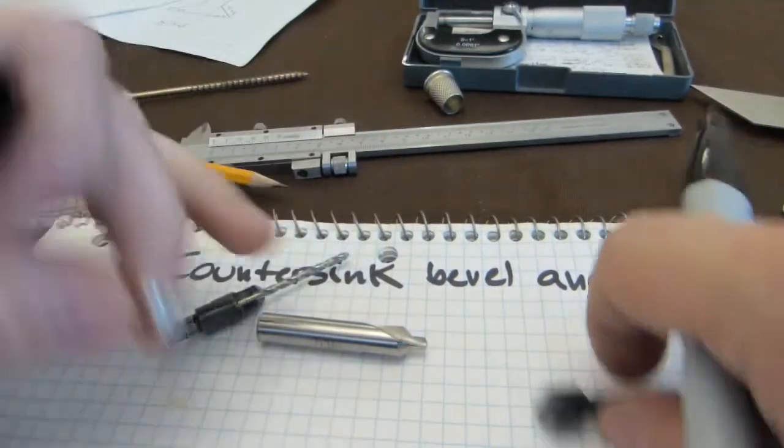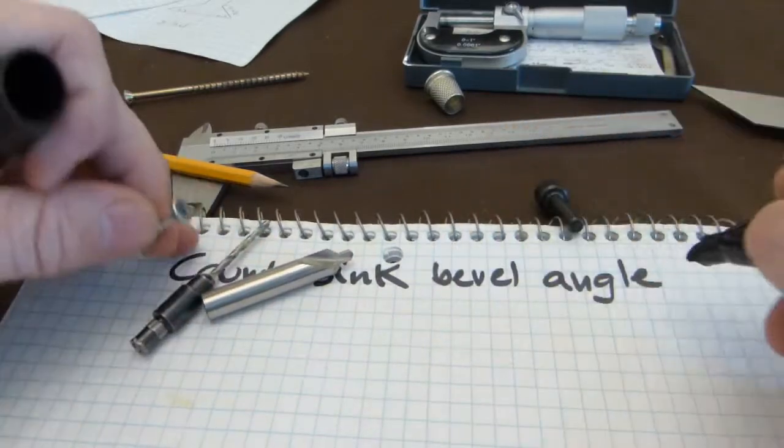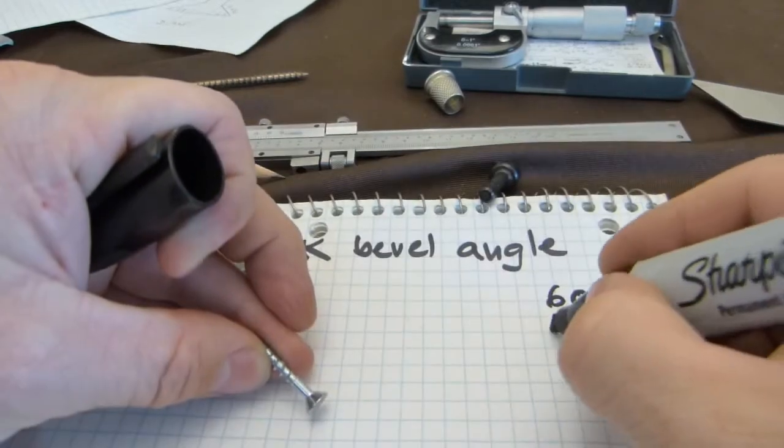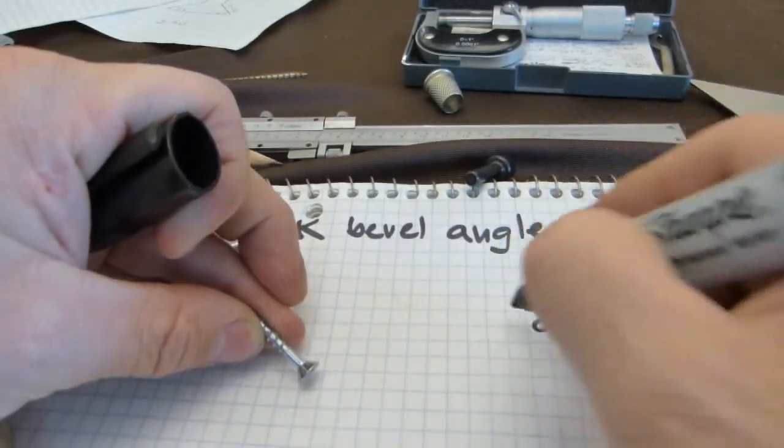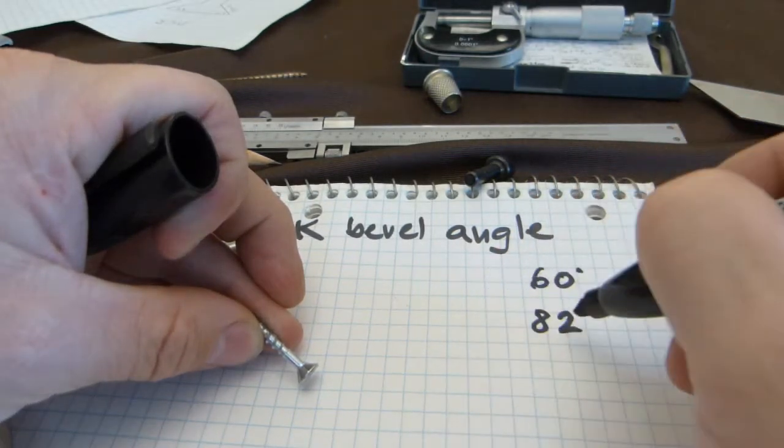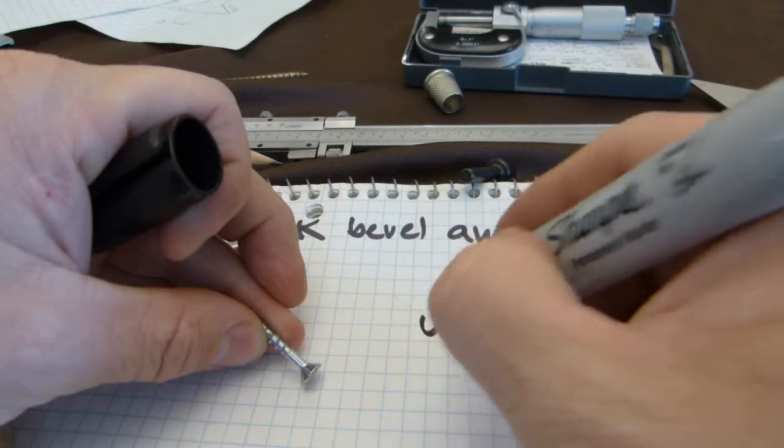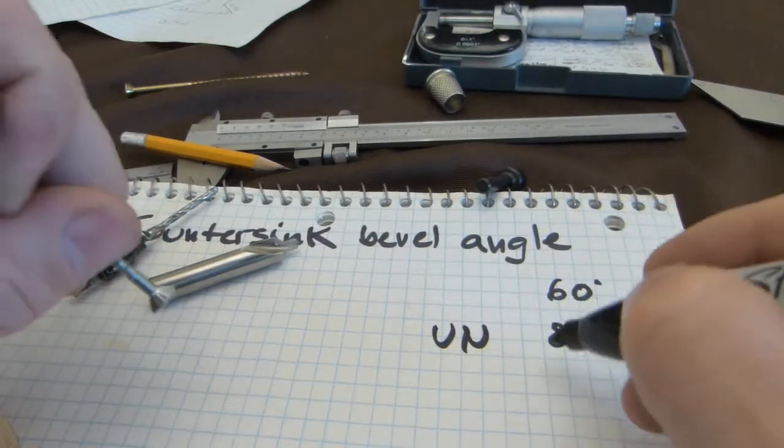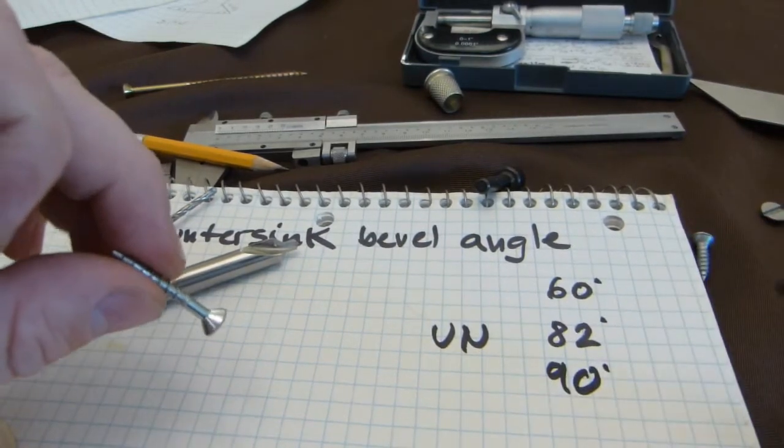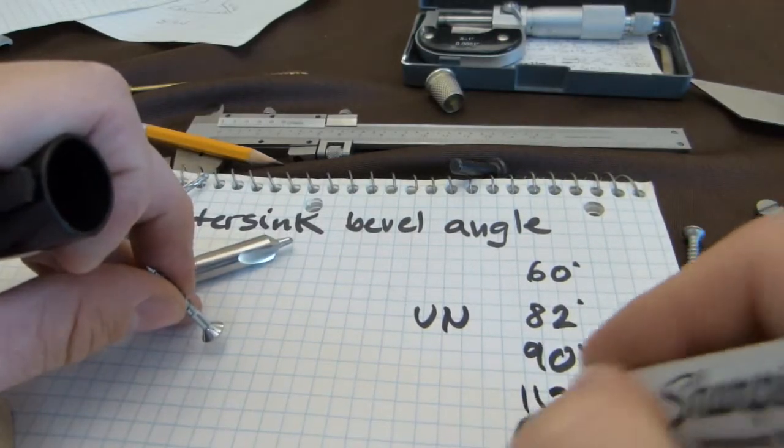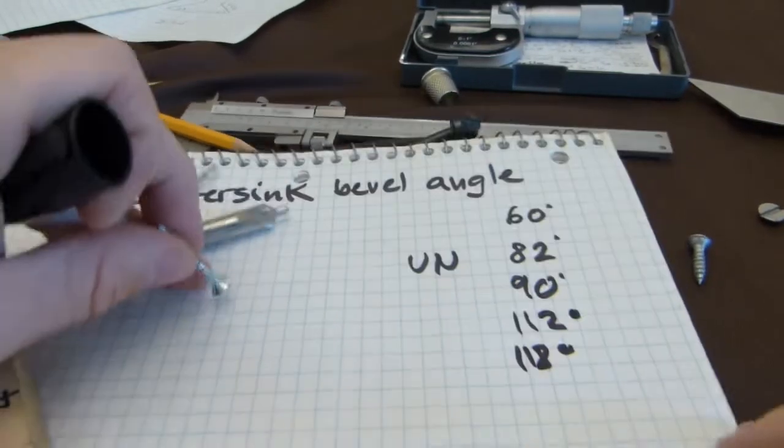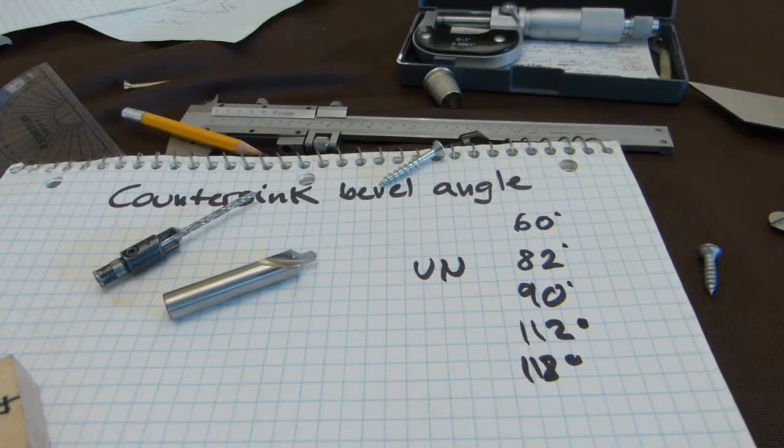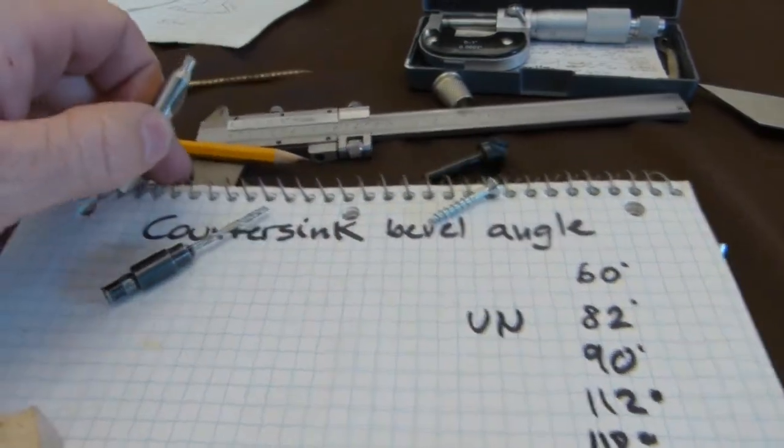Screws come with different head angles. Some have 60 degree bevel angle, some have 82 degrees in the imperial thread pitch, UN, unified thread standards. There is 90 degree bevel angle and there is 112 as well as 118 degree bevel angles as well on the screws, so you have to match it with a countersink bit that has a matching angle.